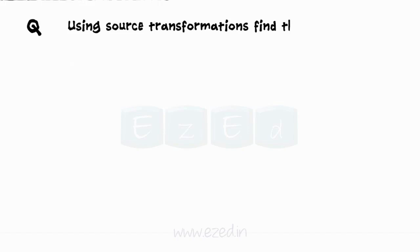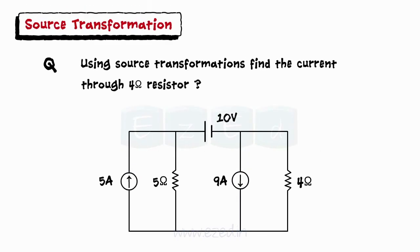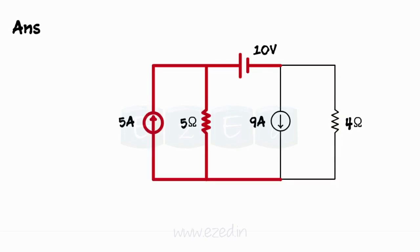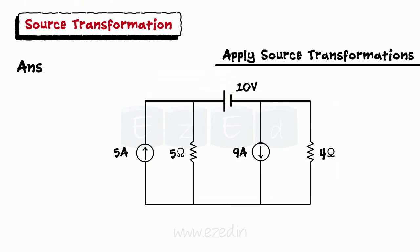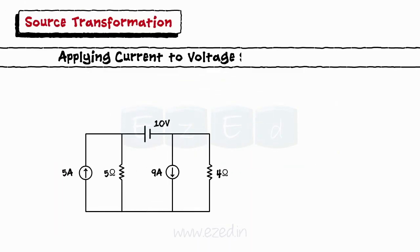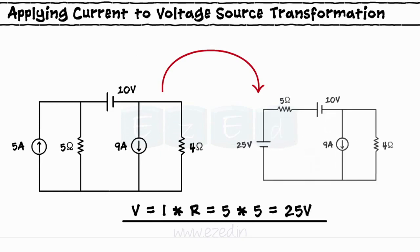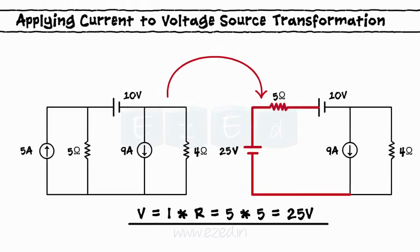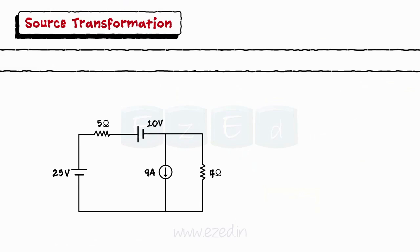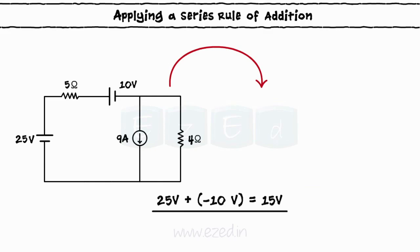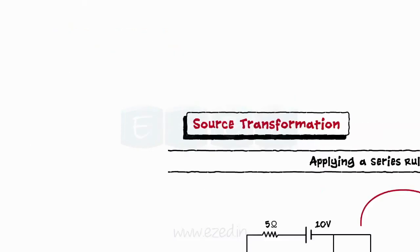Let's implement these concepts with an example: using source transformations, find the current through the 4-ohm resistor. Since we need to find the current through the 4-ohm resistor, we do not touch the right side of the network and start applying source transformations from the left. Applying current-to-voltage source transformation to the current source of 5 amperes, we get an equivalent voltage source of 5 volts connected in series with a 5-ohm resistor.